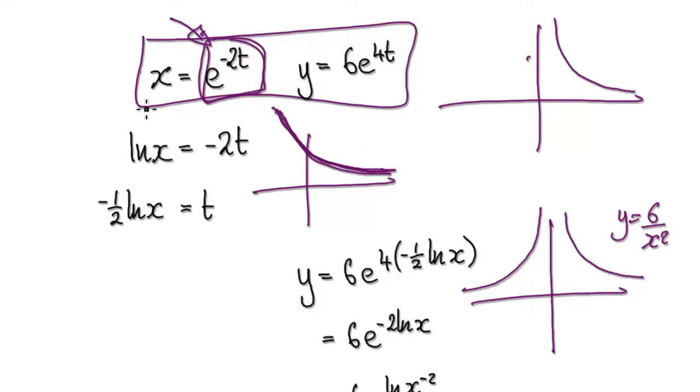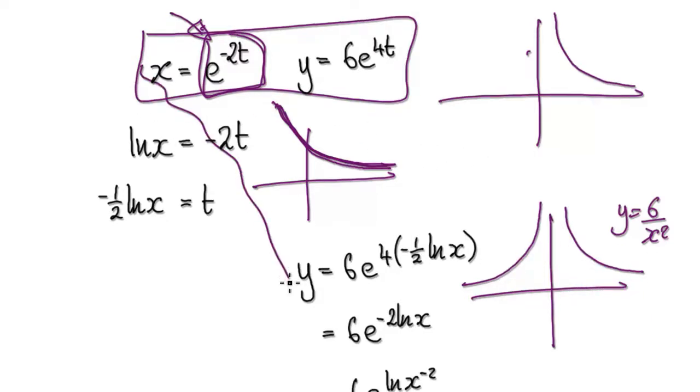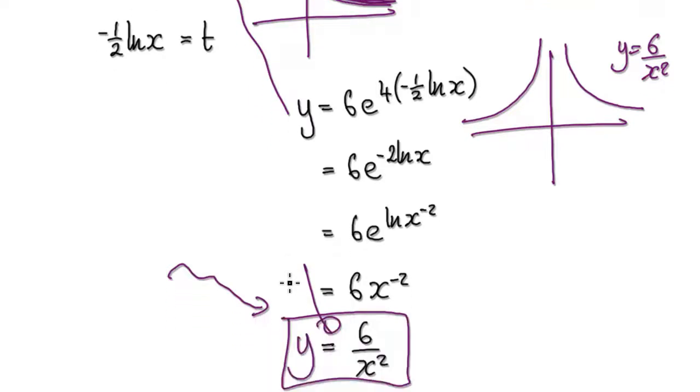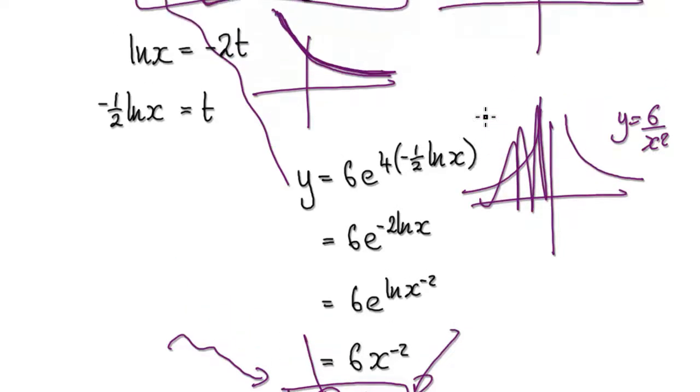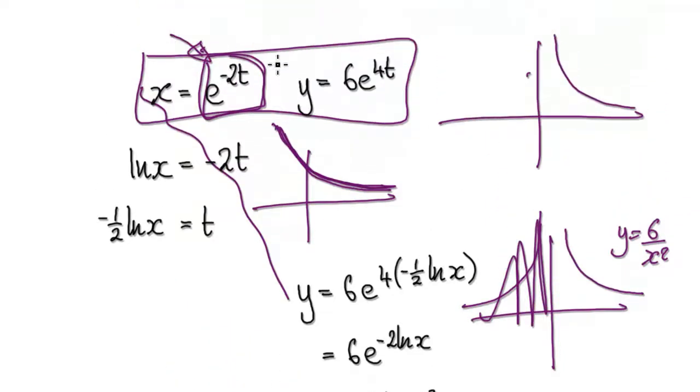So when you convert this, it will give you this. But then you need to discard this side, because the original parametric equations, the original equations here, would not enter the negative realm.